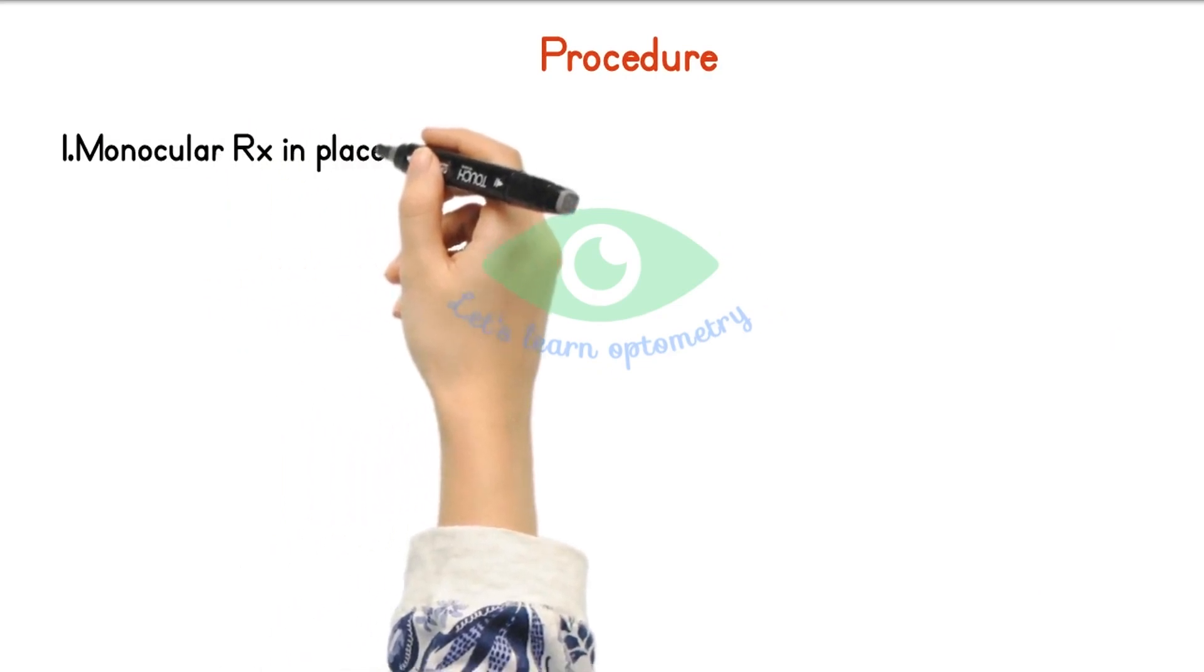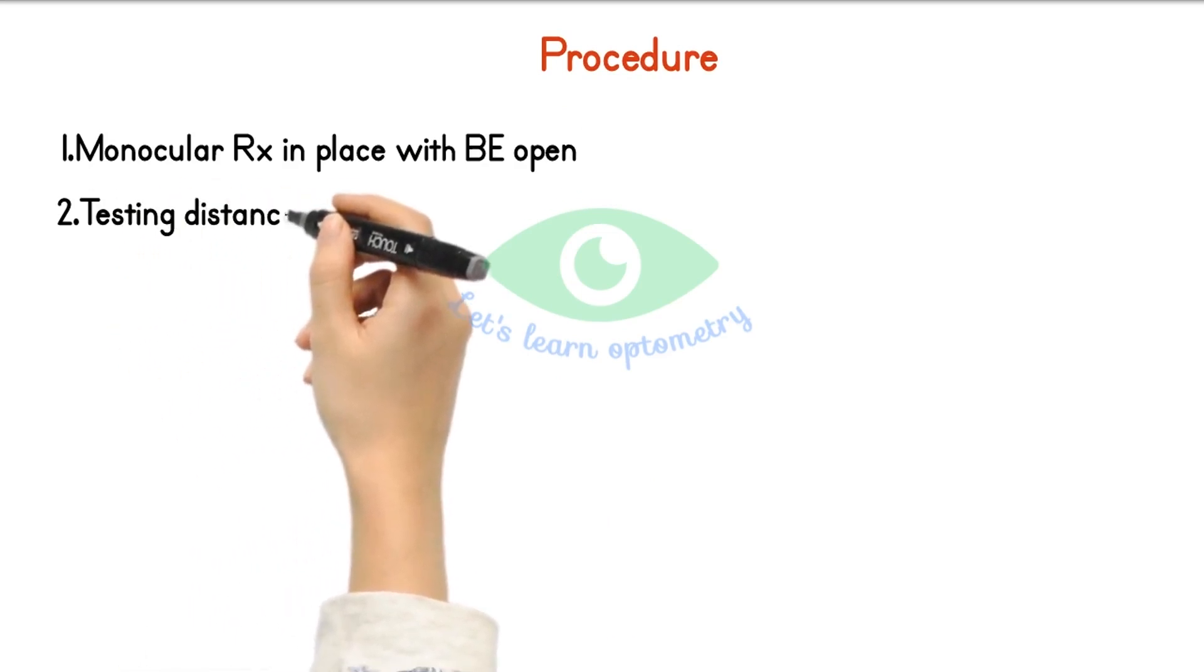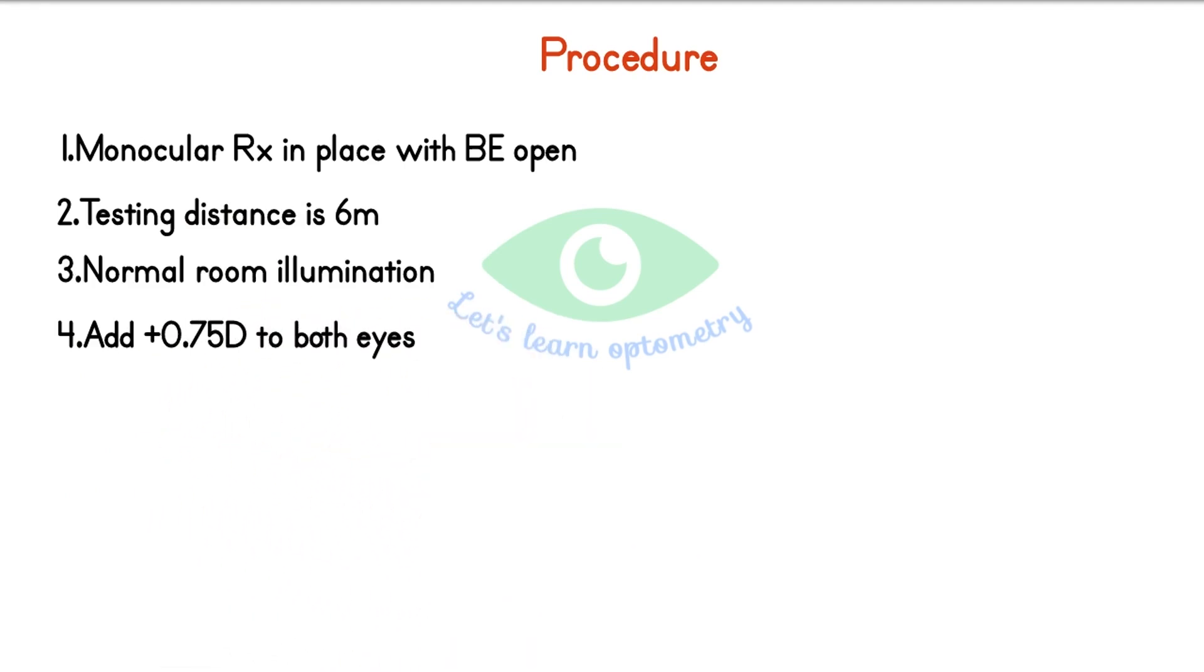The patient is asked to sit upright with the monocular correction in the trial frame and both eyes open. The test is performed at a distance of 6 meters under normal room illumination. You should start the binocular balancing procedure by adding plus 0.75 diopter sphere to both eyes so that the patient's visual acuity is blurred to 6/9 or 6/12 level, assuming the BCVA is 6/6.